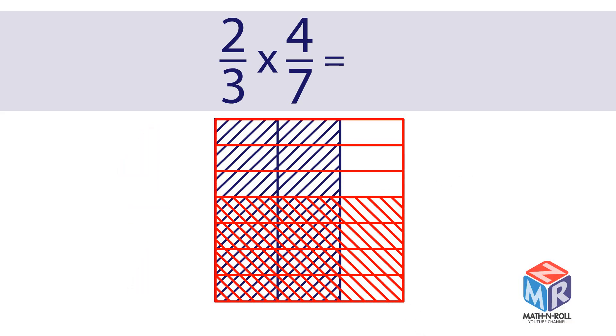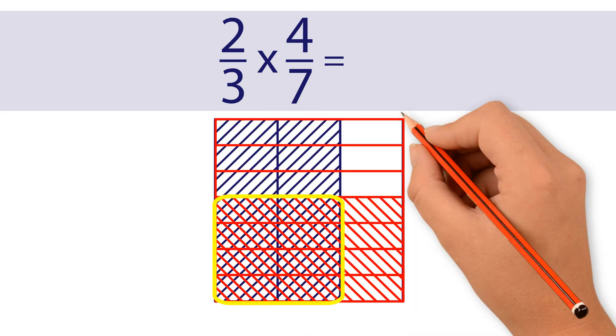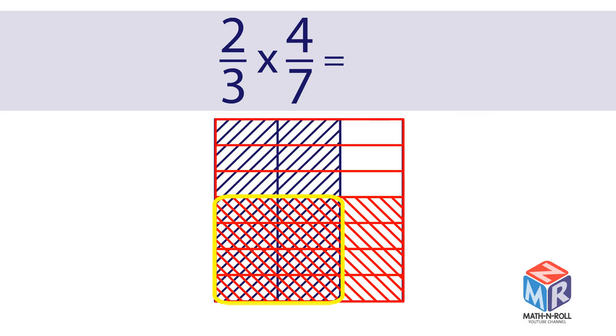The overlapping region represents the answer. 8 out of 21 units are shaded. The answer is 8 over 21.